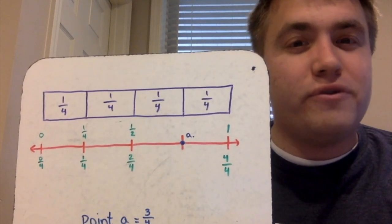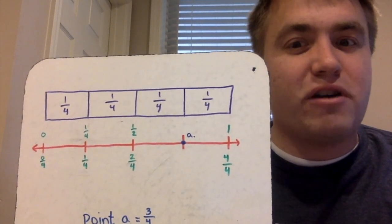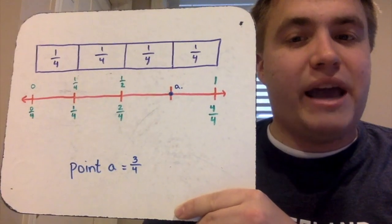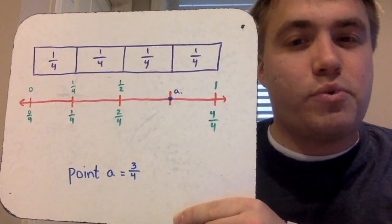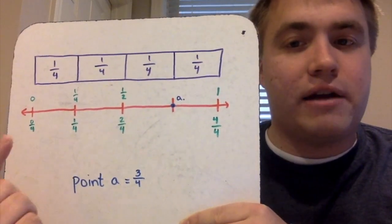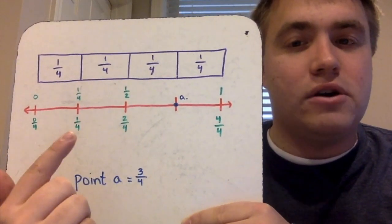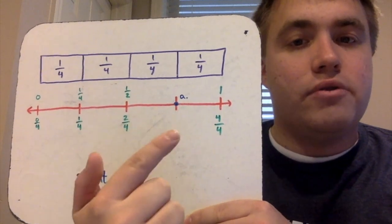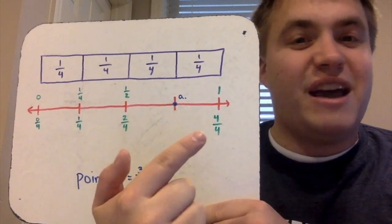Hopefully you had time to figure out what A would represent. Point A represents three-fourths, so we just continue on with that pattern of zero-fourths, one-fourth, two-fourths, three-fourths, and four-fourths.